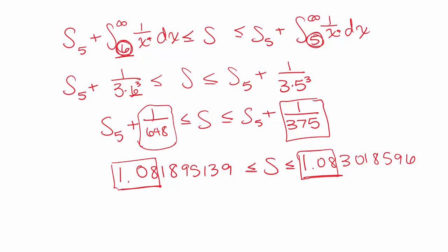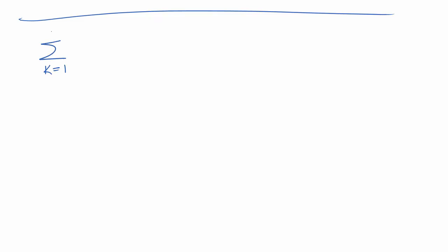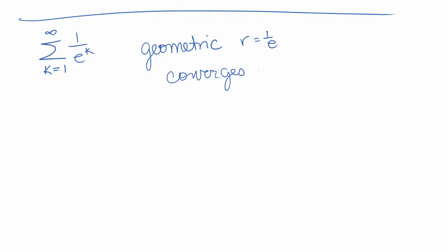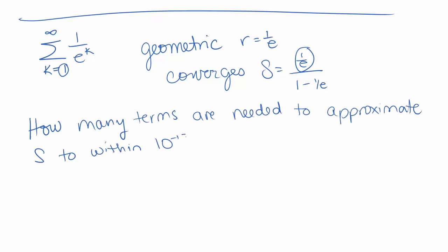This gives us a better indication using these approximating formulas. We can be confident at least to the hundredths place, since both bounds agree there. We can't really be sure after that if our answer is accurate. Let's try one more example: the sum k goes from 1 to infinity of 1 over e to the k. This is a geometric series with r equal to 1 over e, so we already know it converges. In fact, we know it converges to r over 1 minus r, which is 1 over e divided by 1 minus 1 over e. The question again is: how many terms are needed to approximate s to within 10 to the negative 12th?